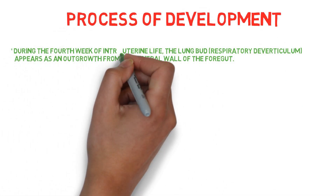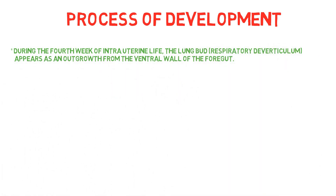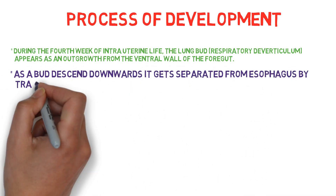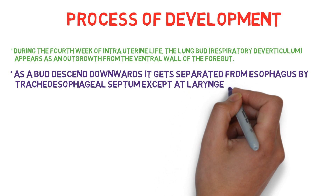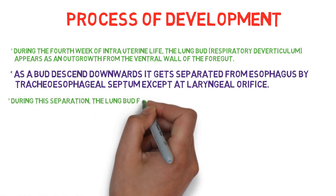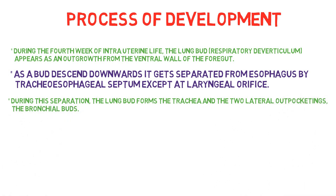During the fourth week of intrauterine life, the lung bud, also known as the respiratory diverticulum, appears as an outgrowth from the ventral wall of the foregut. As the lung bud descends downward, it is separated from the esophagus with the help of the tracheoesophageal septum, except at the laryngeal orifice. During this separation, the lung bud forms the trachea and two lateral outpocketings known as the bronchial buds.